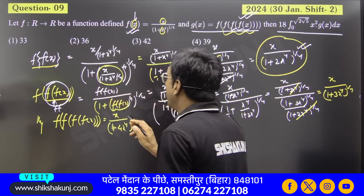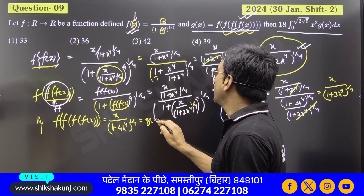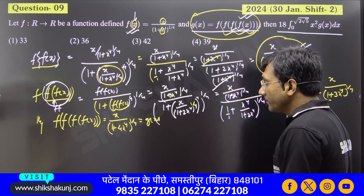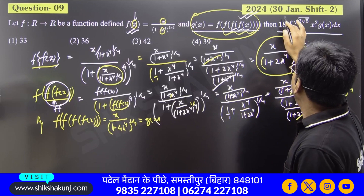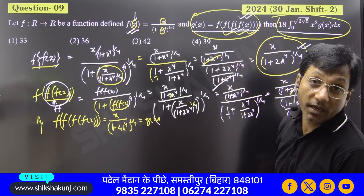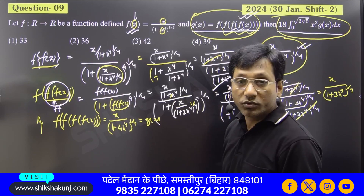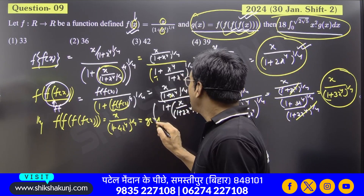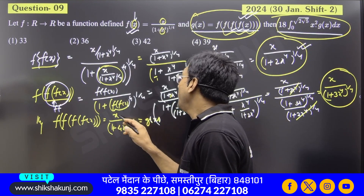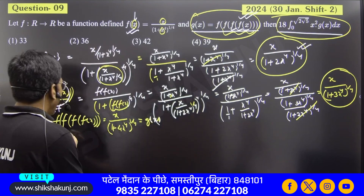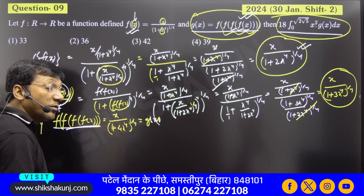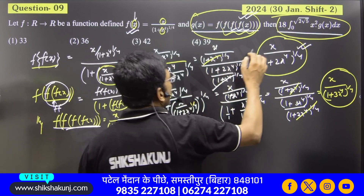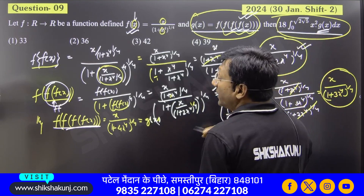This is our function. So g(x) equals this — this is our g(x). Now that g(x) is found, integration should come next. So g(x) equals x divided by (1 + 4x⁴) to the power 1/4. Now that you know g(x), integrate it.